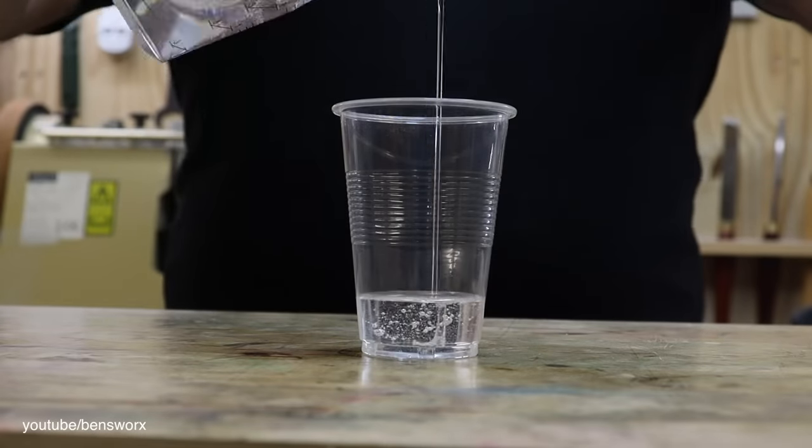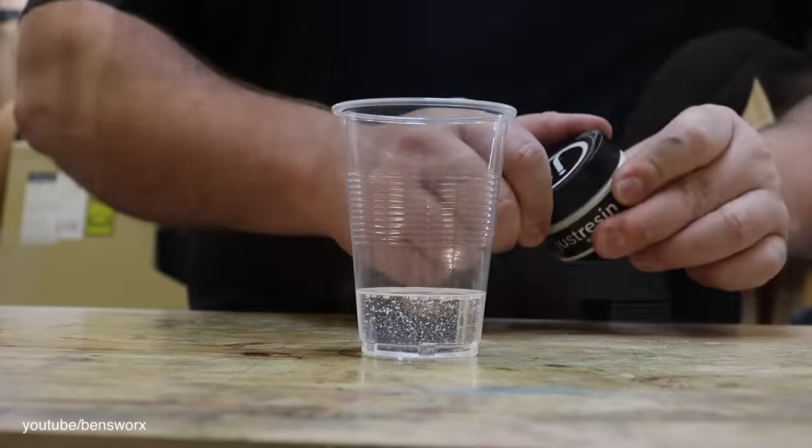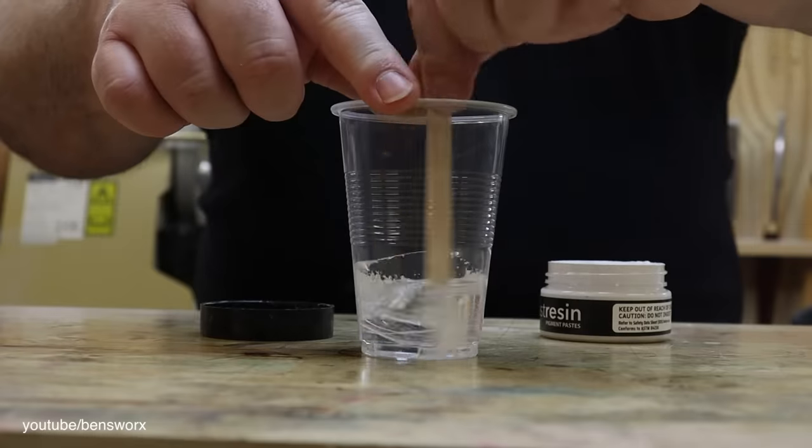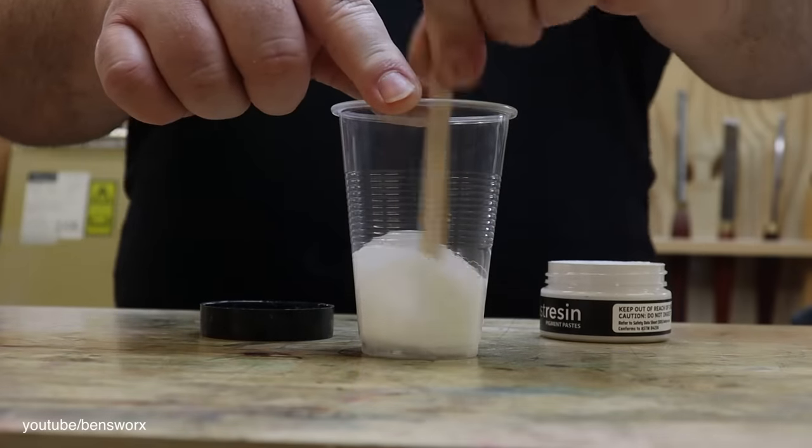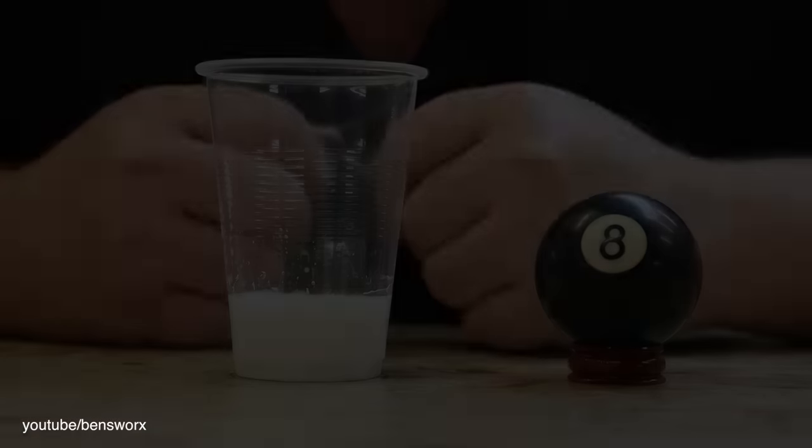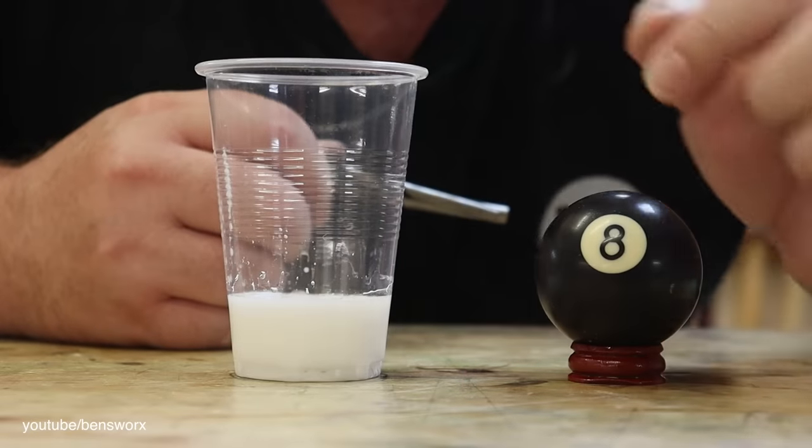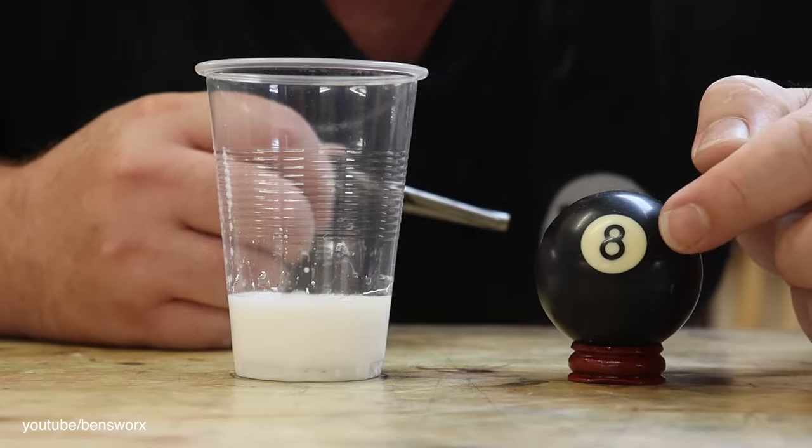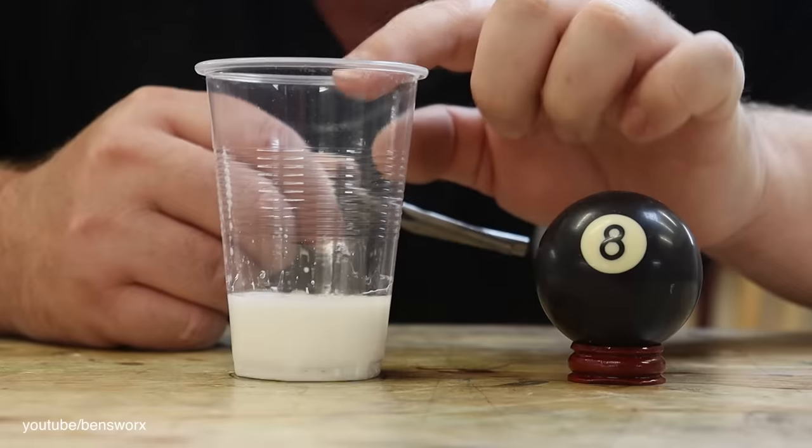It's now time to start on the number 8. And the first thing I'm going to do is pour myself a white blank. Now that the resin is cured, I can work on the black outline. Now to do that, I'm going to drill a couple of holes in the white resin.